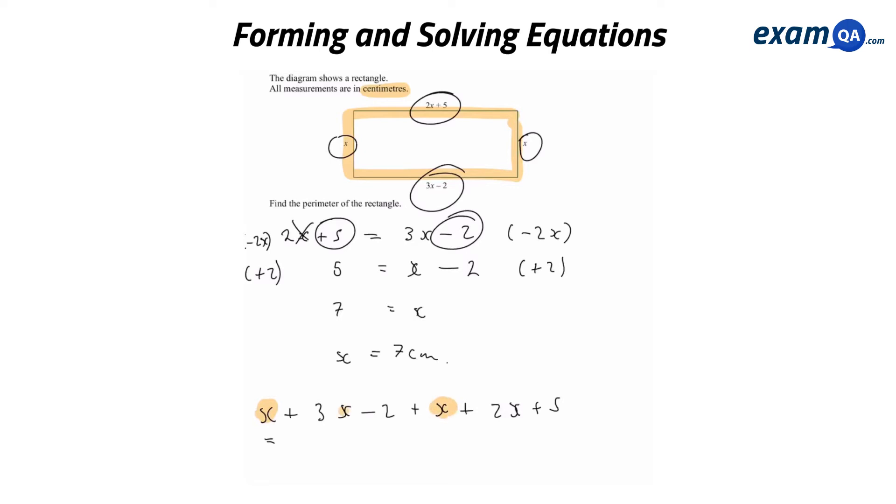We've got 1x, 2x, we've got 5x now. 2x plus 3x, 5x, plus another 2x, that's 7x. And then we've also got a minus 2 plus 5. Minus 2 plus 5 will give you plus 3. So the perimeter is 7x plus 3. And of course, we know what x is. So we can substitute that into our expression. This is 7 times 7 plus 3, which is 49 plus 3, which is 52 centimeters. So the perimeter of this rectangle is 52 centimeters.